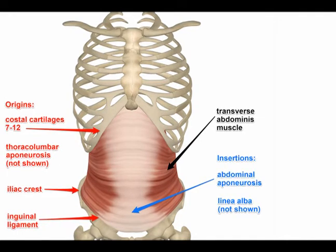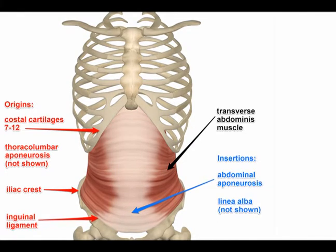The insertion is the abdominal aponeurosis to the linea alba, the pubic symphysis, and the xiphoid process.